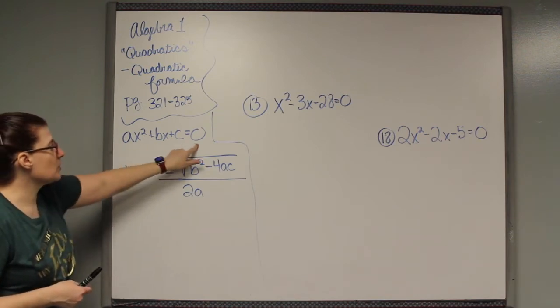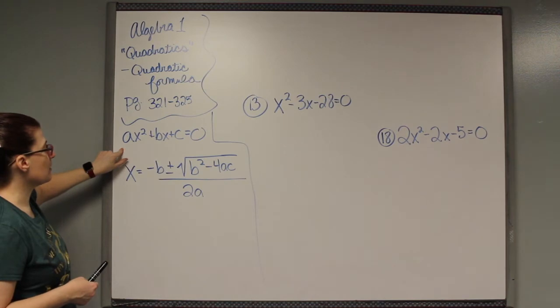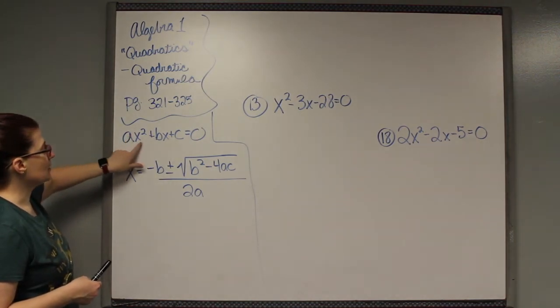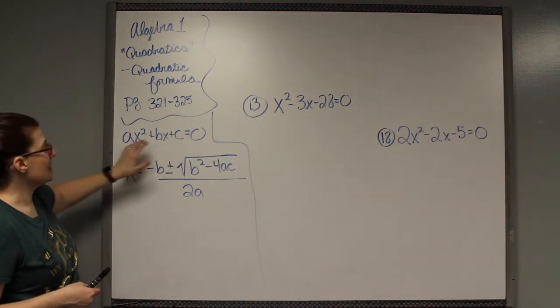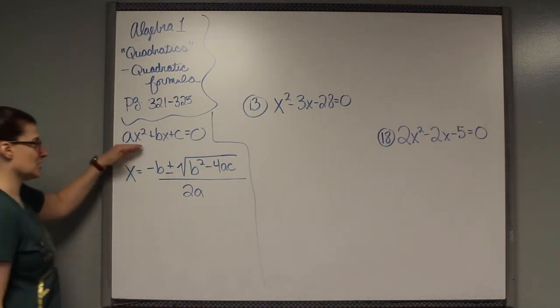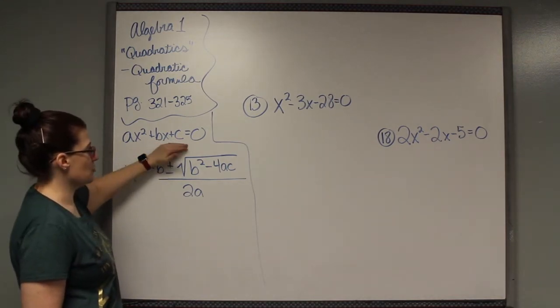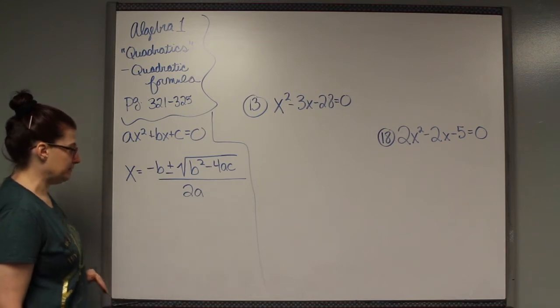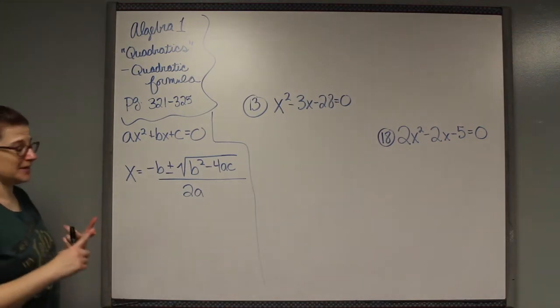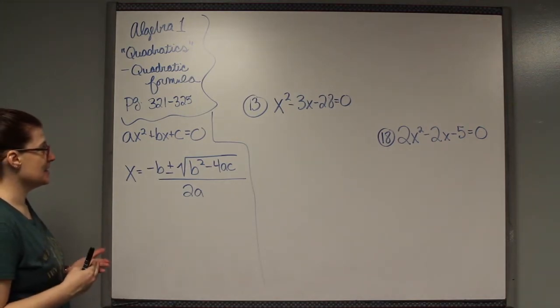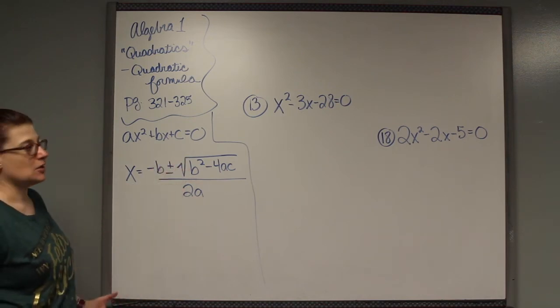You want to put all of your equations in the quadratic form which is ax squared plus bx plus c, and a, b, and c are just numbers. That's your x squared term, your x term, and your number term. Once you do that you identify your a, b, and c and then you plug those in here and solve.